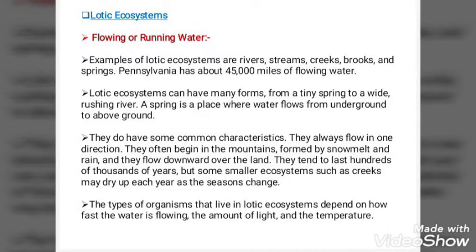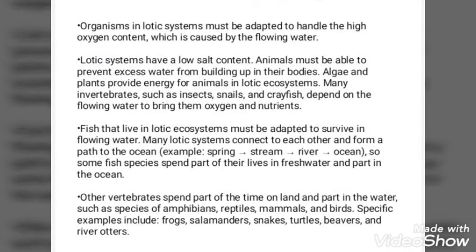Lotic ecosystems often begin in the mountains, formed by snowmelt and rain, and they flow downward over the land. They tend to last hundreds of thousands of years, but some smaller ecosystems such as creeks may dry up each year as the seasons change. The types of organisms that live in lotic ecosystems depend on how fast the water is flowing, the amount of light, and the temperature.